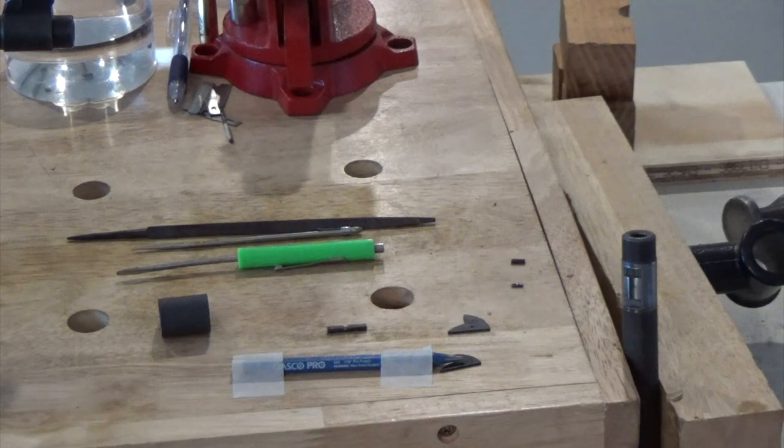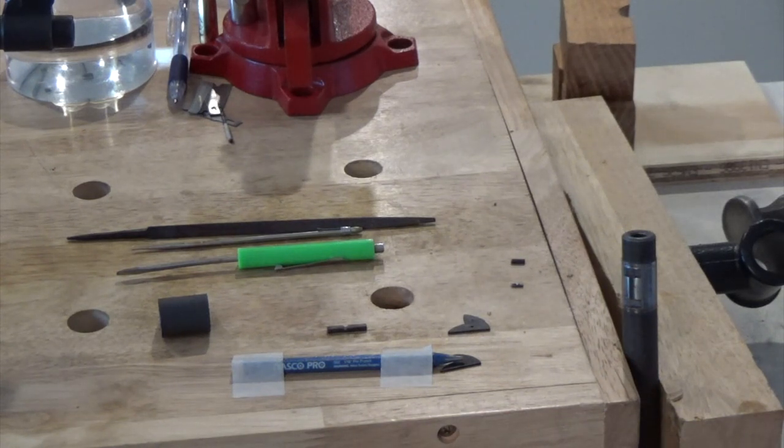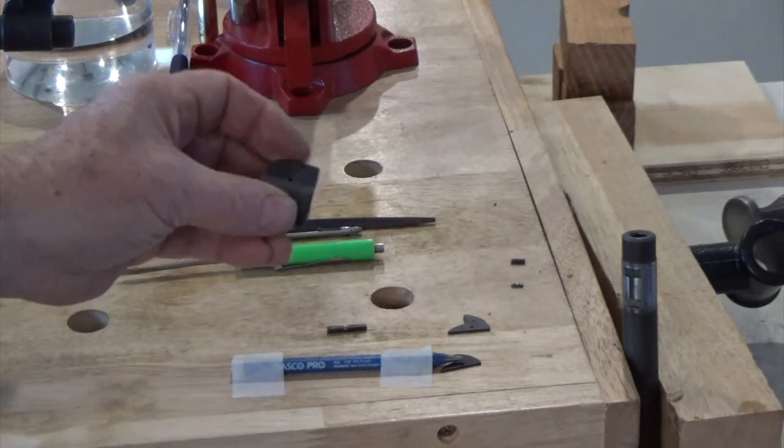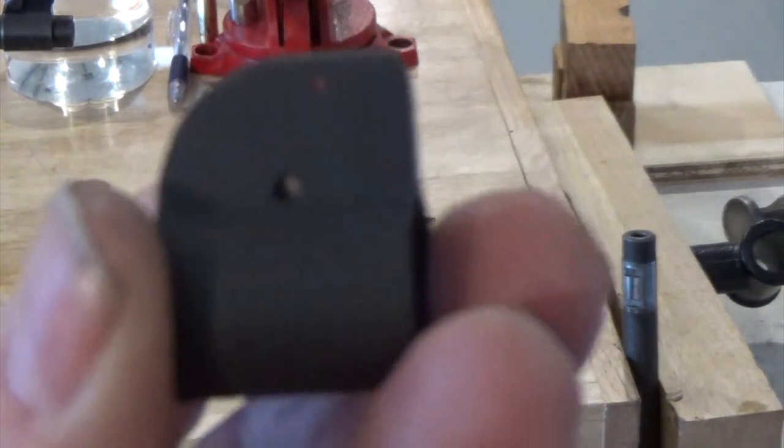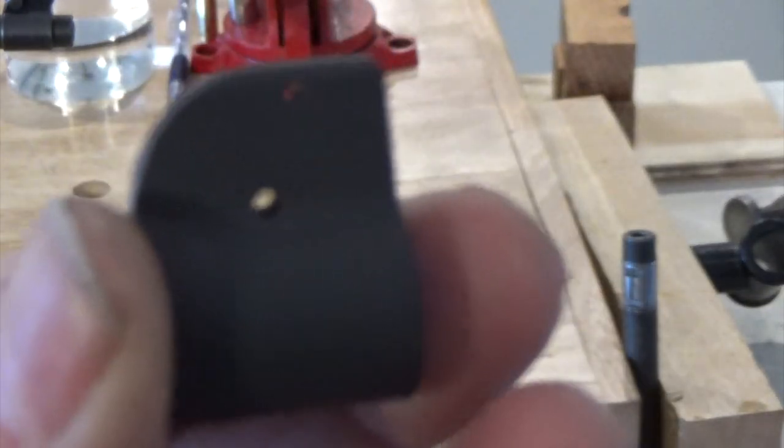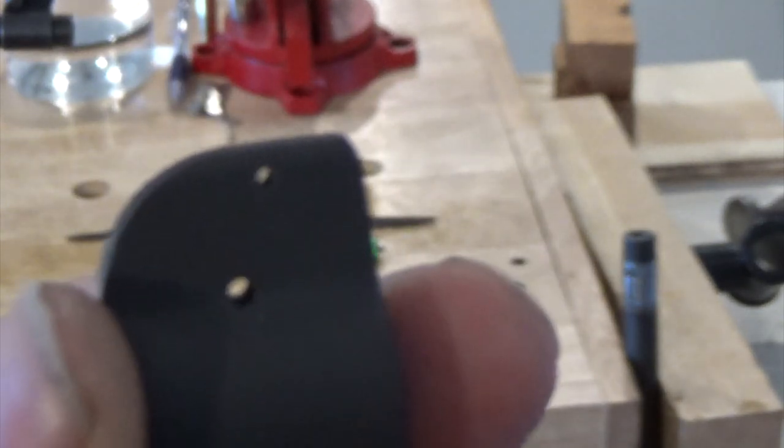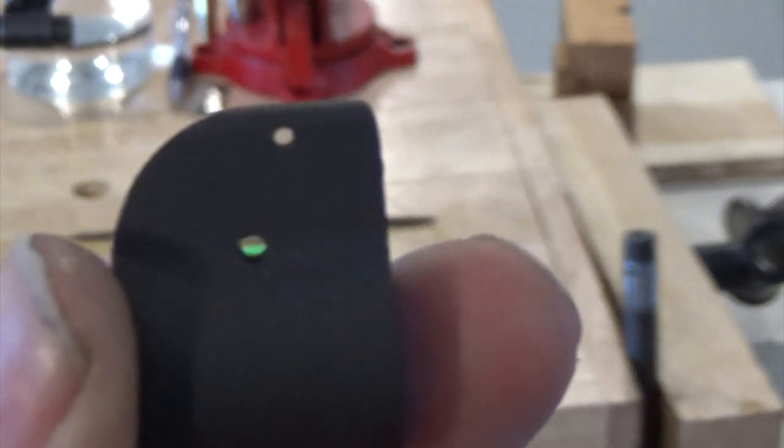We're installing the front sight on a 1903 A3 Springfield. The sight base has two different diameter size holes. The one that goes through the key is 90,000 and the one that goes through the blade is 60,000.